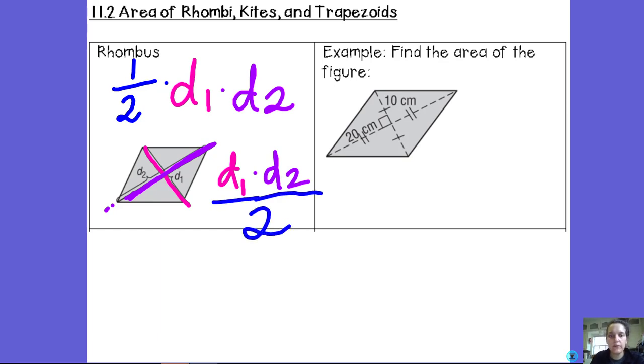So you could also write this as diagonal 1 times diagonal 2, all of that over 2. Either way we get the same answer.